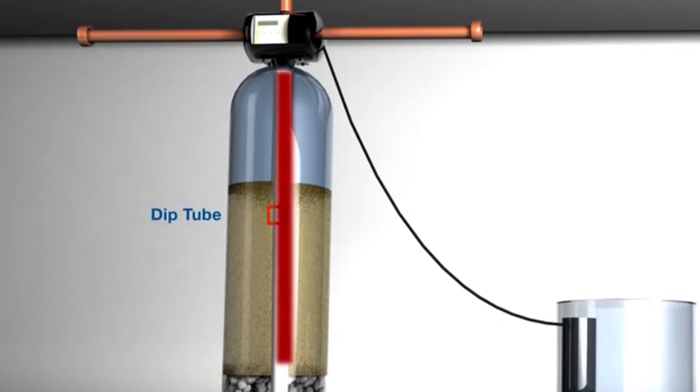Next, we have the dip tube. This tube is also known as the distribution tube or riser tube. The next element in the system is the resin.